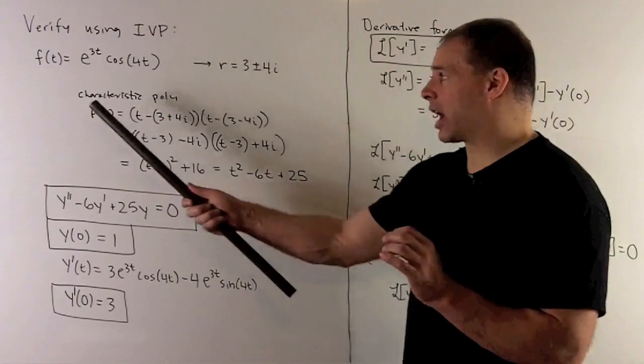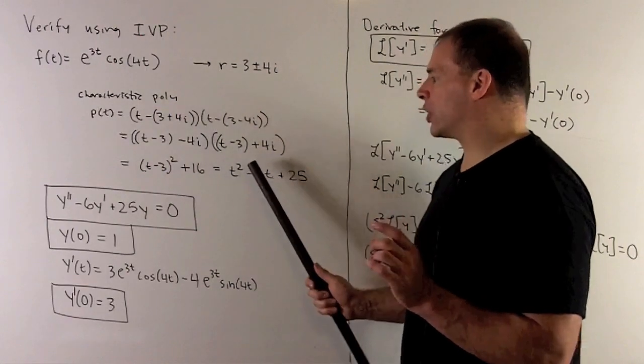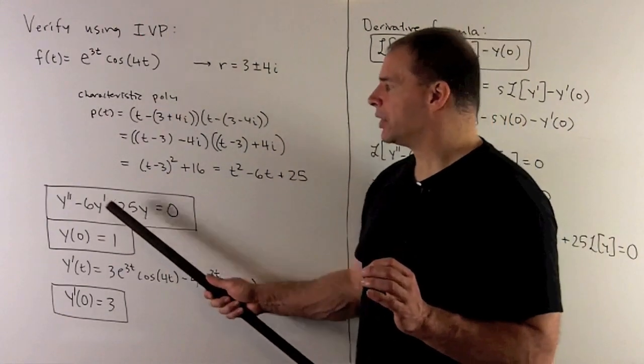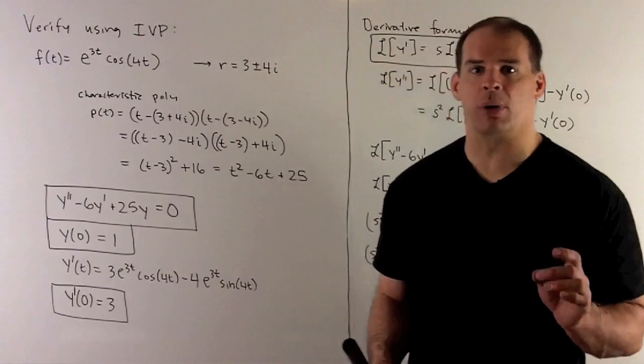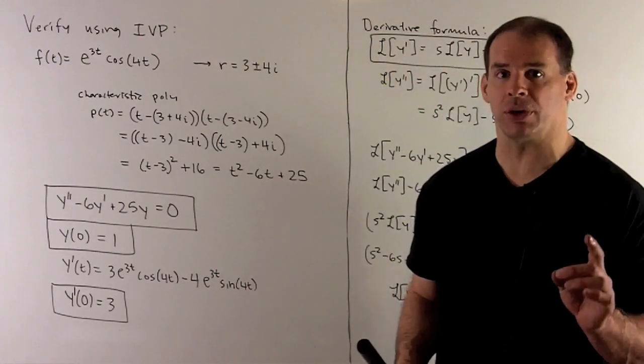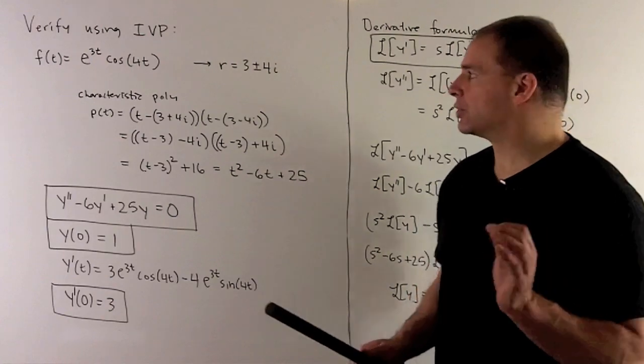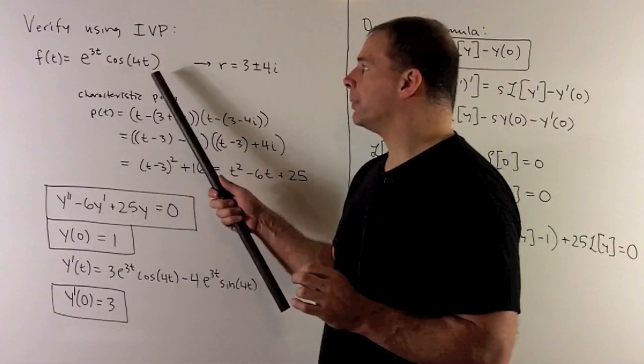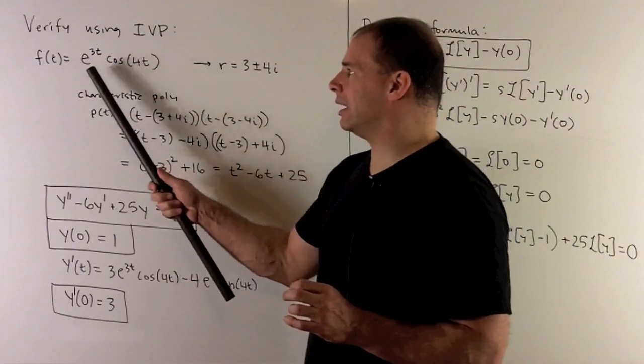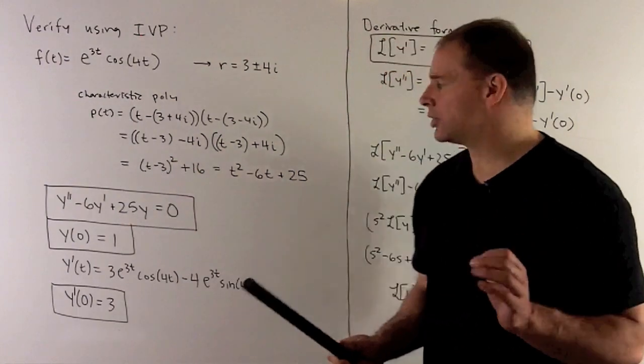This is our characteristic polynomial, so I translate that back to an ODE: y'' - 6y' + 25y = 0. The only thing we need now are the initial conditions. If we evaluate at 0, cosine goes to 1, e^(3t) goes to 1, so we get y(0) = 1.